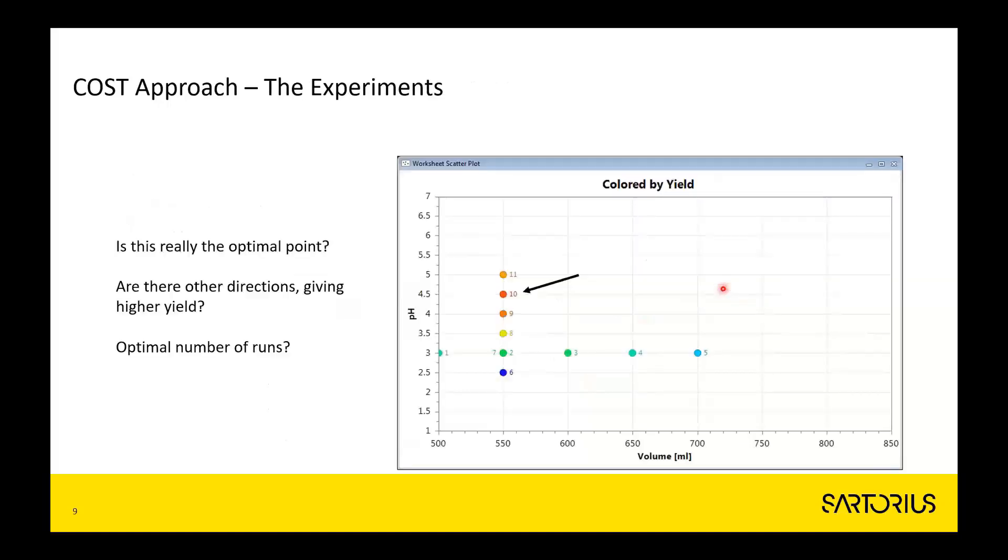In the beginning, we started by keeping pH at 3 and changing the volume in five steps. After these five experiments, it was concluded that 550 was the best volume. Then we did six experiments changing pH, and we found that pH 4.5, experiment number 10 in this series of 11 experiments, was the best.